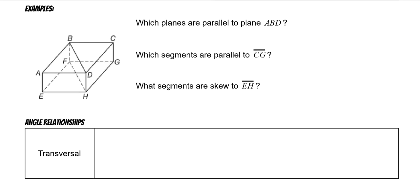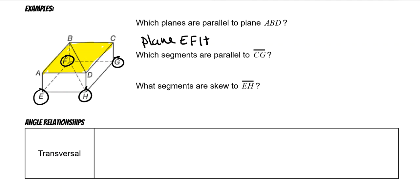For example, in this picture, which planes are parallel to ABD? ABD is the top — the whole top of this box. So which planes are parallel to the top of the box? That would be the bottom of the box. You could call it plane EFH, though it doesn't have to be called that. You could use any combination of the four points that make up that plane, and any combination would be correct.